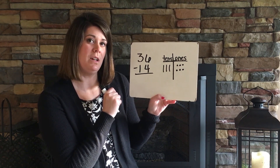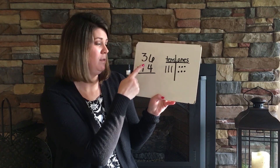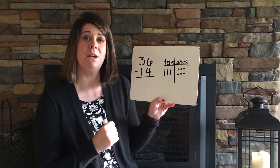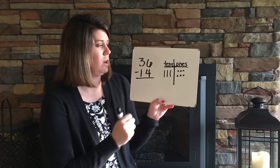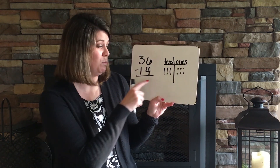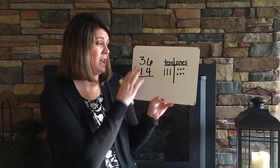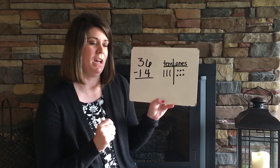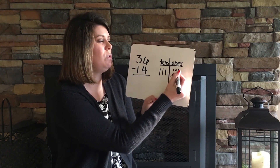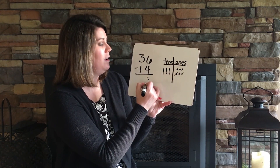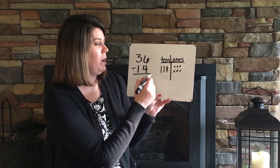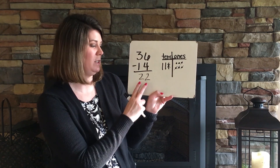We call this line the floor. Let's look at 36 minus 14. Do I have more on top or more on the floor? There's more on top, so no need to stop — I'm ready to subtract. Starting in the 1's place: 6 minus 4, I mark out 4, leaving 2. Moving to the 10's place: 3 minus 1 leaves 2. So 36 minus 14 equals 22.